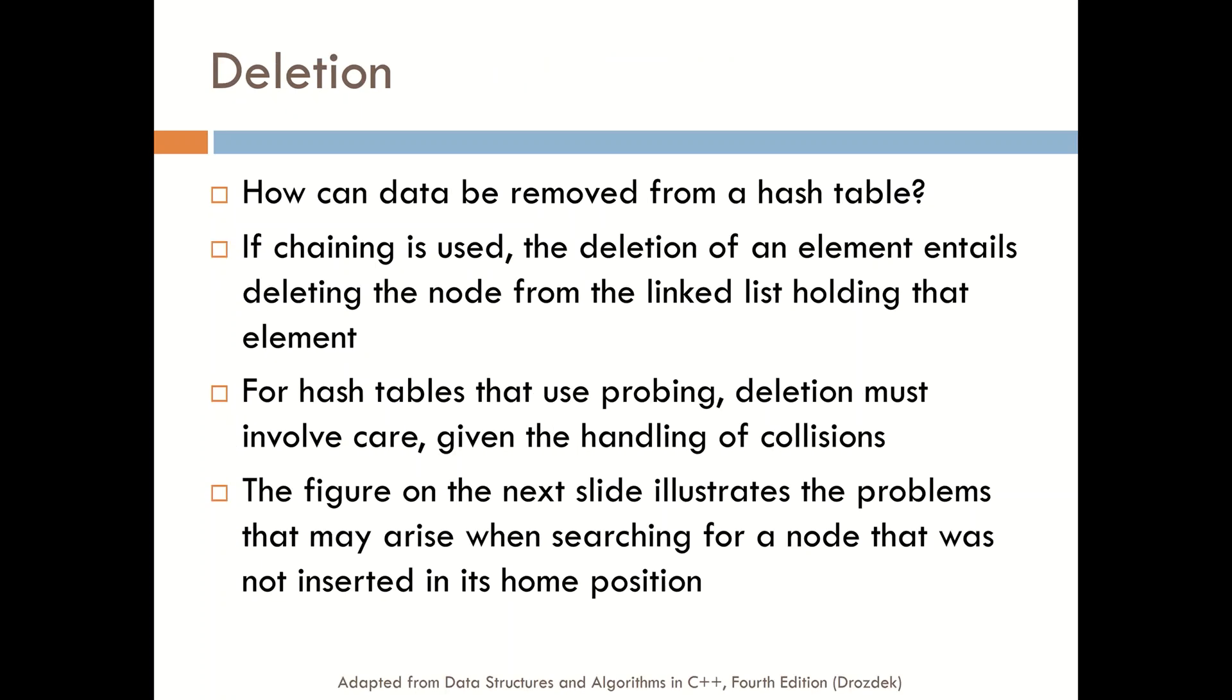In deleting an item, if separate chaining is used, we just hash into the location, begin to traverse the linked list and find the item and then we remove it from the linked list. Or if the item's not there, we just report that it's not there. For hash tables that use open addressing and probing, deletion must be done in a particular way so that we don't lose the ability to actually remove items.